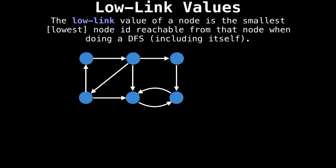To understand Tarjan's strongly connected components algorithm, we're going to need to understand the concept of a low link value. Simply put, a low link value is the smallest node ID reachable from that node, including itself. For that to make sense, we're going to need to label the nodes in our graph using a depth first search.